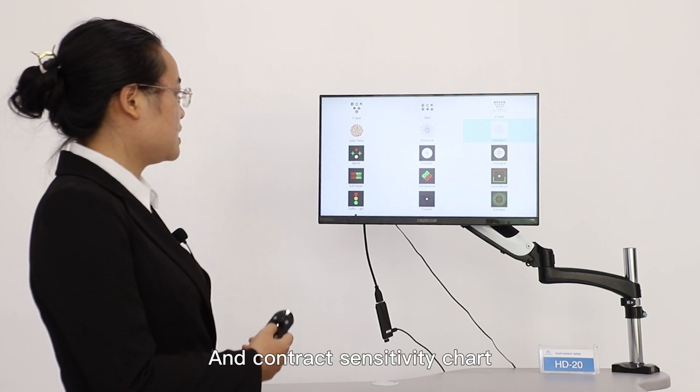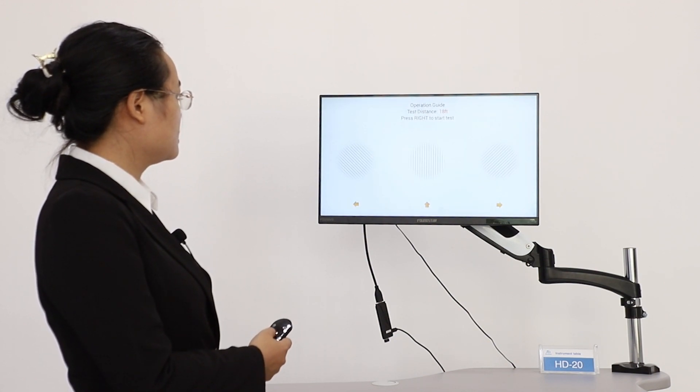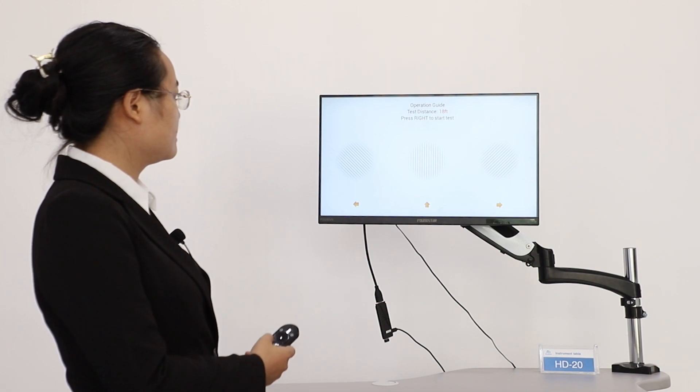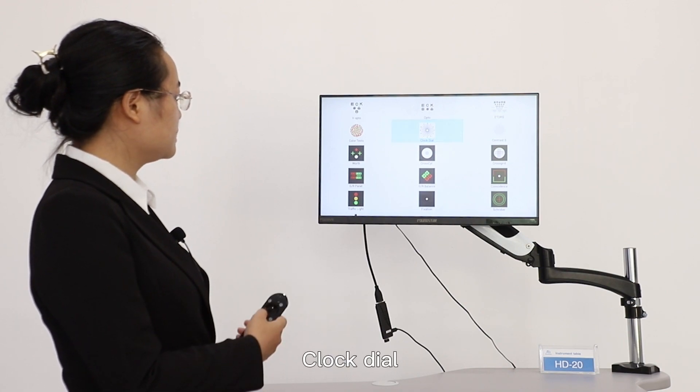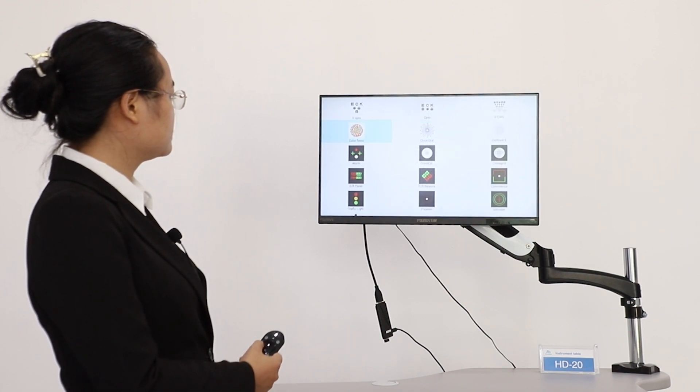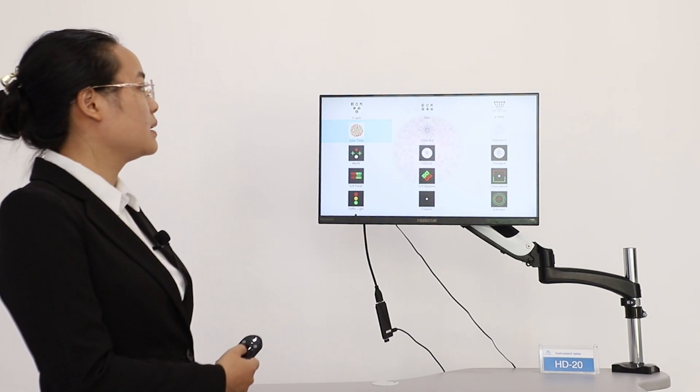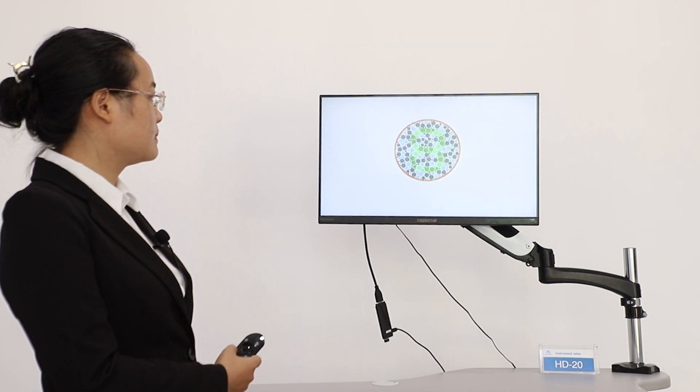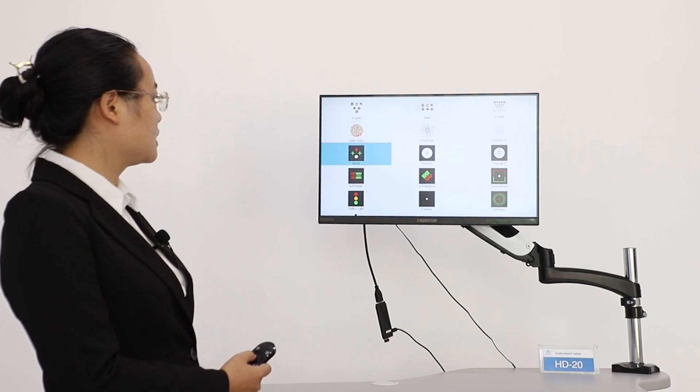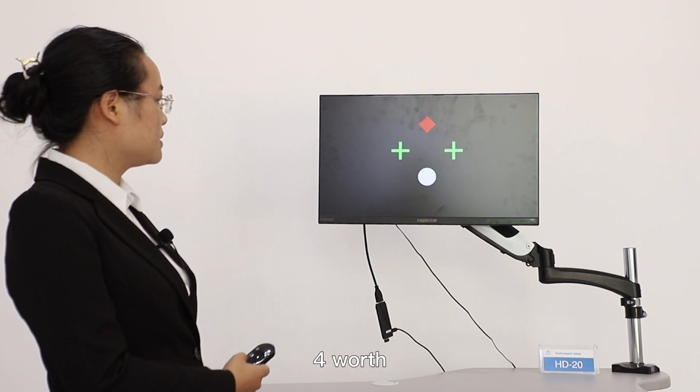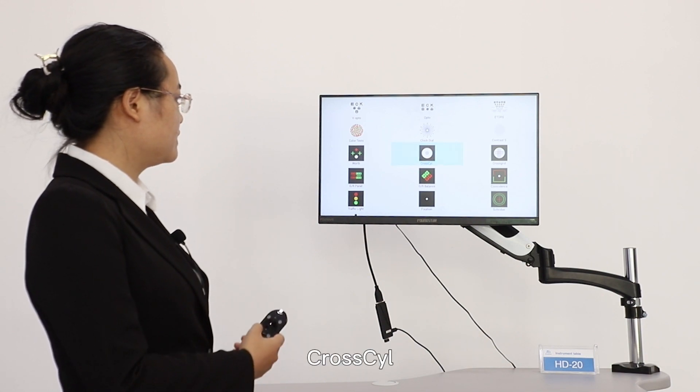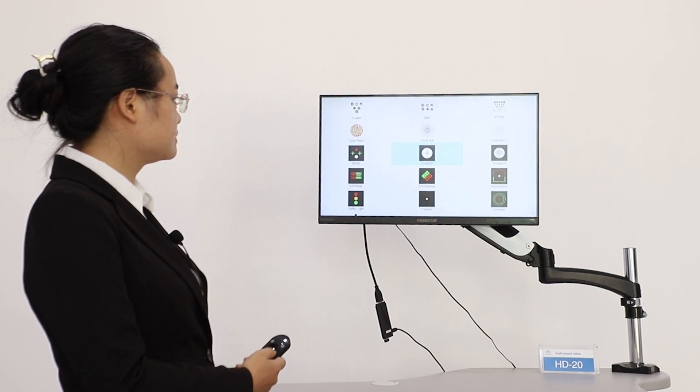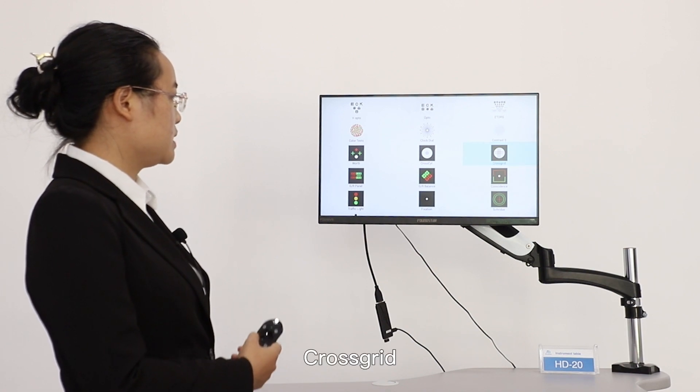And the cone chart sensitivity chart. Clock dial. Color test. Cross grid.